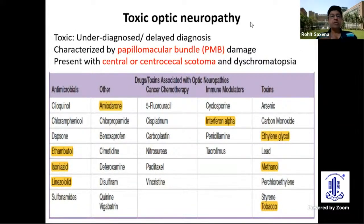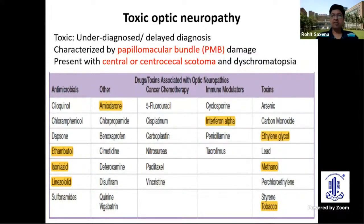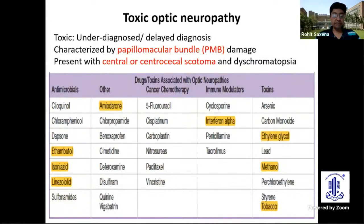Toxic optic neuropathy is often underdiagnosed or more truly delayed diagnosed because it mimics or presents many other causes that can present in the same way. It is characterized by the papillomacular bundle involvement and will present with central or cecocentral scotomas. There are a whole lot of drugs responsible for toxic optic neuropathy. The three ATT drugs — anti-tubercular treatment — are very important, and considering the high amount of ATT being given in our country, it really becomes the most important toxic optic neuropathy.